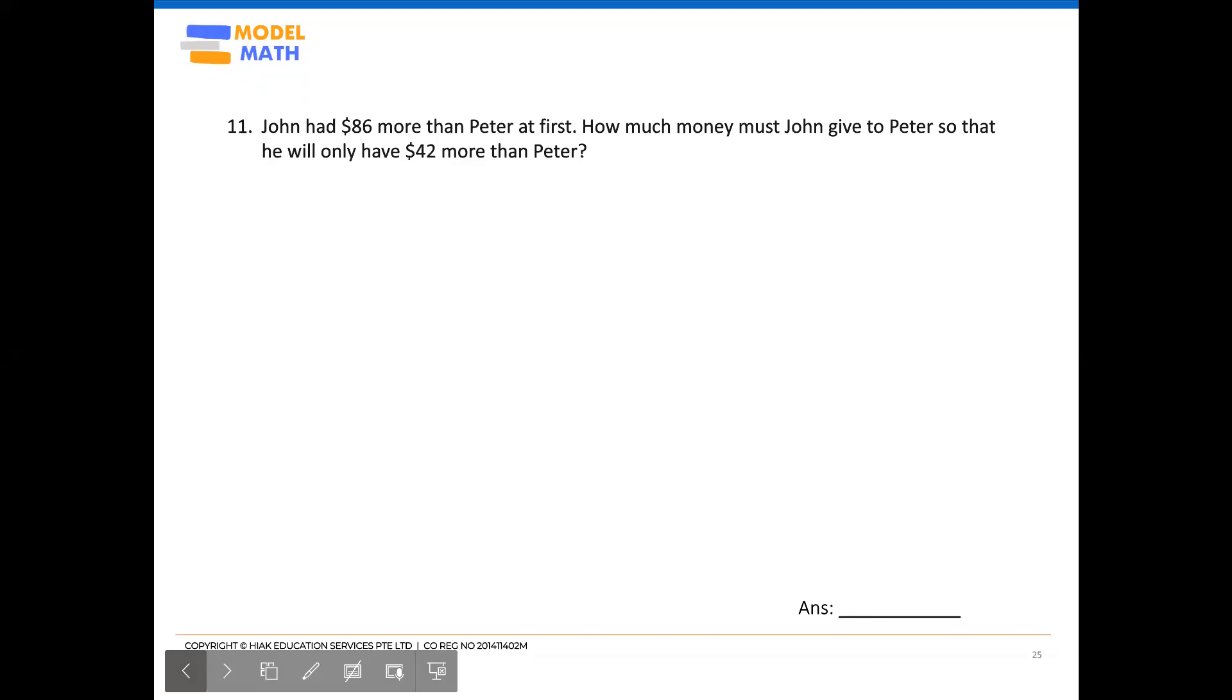Question 11. John had $86 more than Peter at first. How much money must John give to Peter so that he will only have $42 more than Peter?